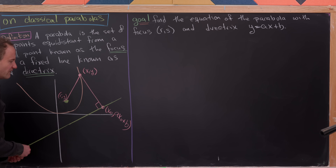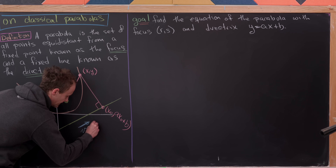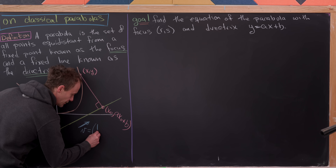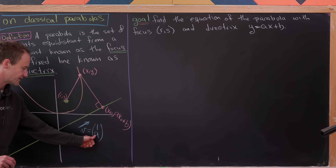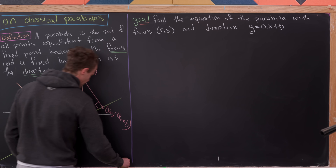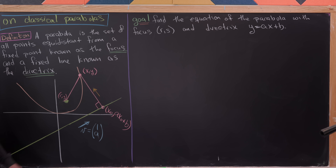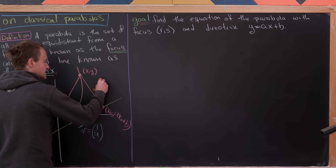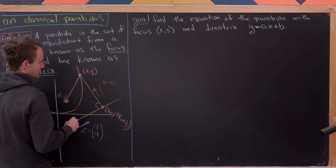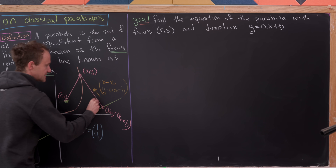Now let's place two vectors. Vector v is parallel to the line; since the line has slope a, for every one unit horizontally it travels a units vertically, so v = (1, a). Vector w is parallel to the segment joining our parabola point to the line, with coordinates (x minus x-naught, y minus ax-naught minus b).